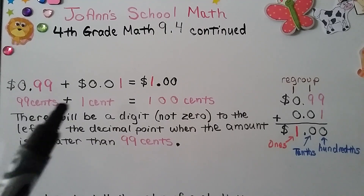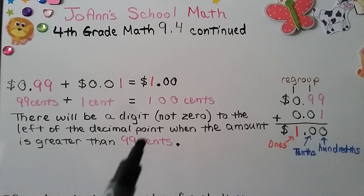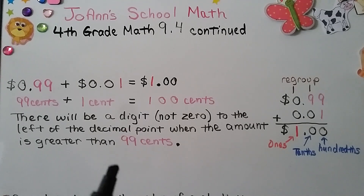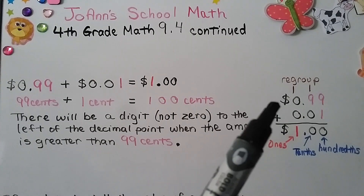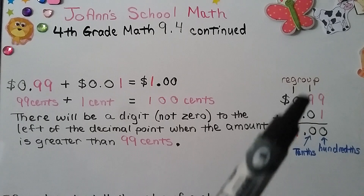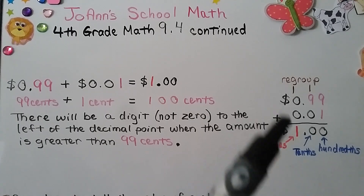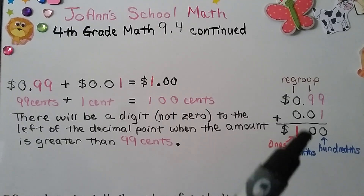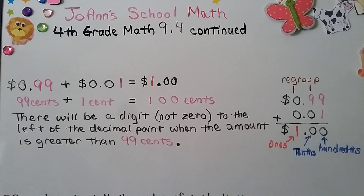If we had 99 cents and added one more cent, it would equal 100 cents — one dollar. There would be a digit other than zero to the left of the decimal point. When the amount is greater than 99 cents, we stack and line up our decimal points. Adding 99 cents and one cent: 9 plus 1 is 10, regroup to the tens place, put a zero down; 9 plus 1 is 10 again, regroup to the ones place. The tenths and hundredths are both zero — we have one dollar. In lesson 9.6 we'll be adding decimals.